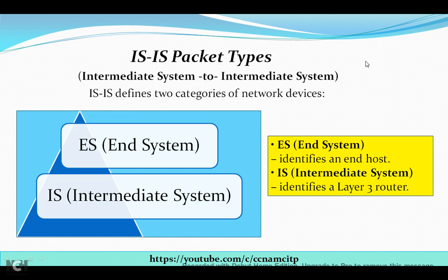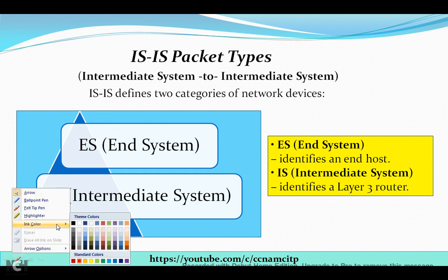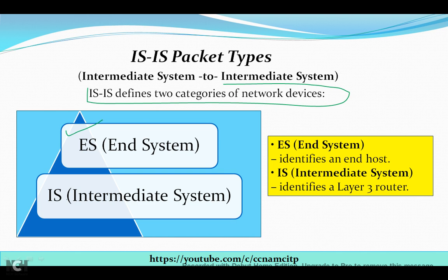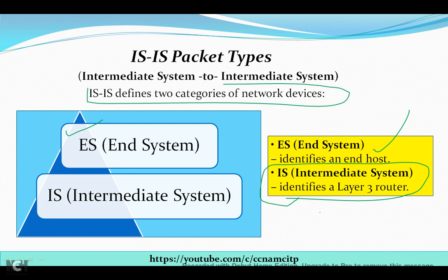In this video today, I'm going to share about IS-IS — Intermediate System to Intermediate System — packet types, and the basic things about all packet types. Basically, IS-IS defines two categories of network devices. The first one is ES, which is End System, and the second one is IS, which is Intermediate System. ES identifies an end host where data has to go, and IS identifies a Layer 3 router.